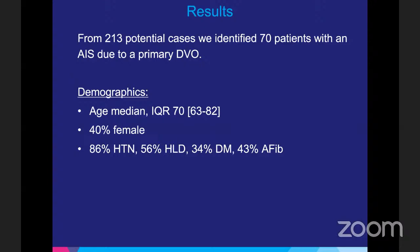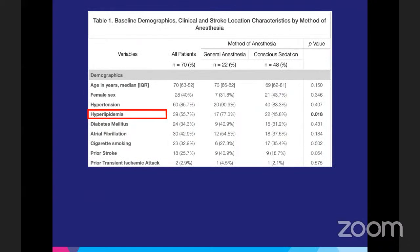From our results, we identified 70 patients meeting inclusion criteria. Median age was 70, 40% were female, with high prevalence of comorbidities including hypertension, hyperlipidemia, diabetes, and AFib. Hyperlipidemia was significantly higher among the general anesthesia group, which was assessed for the multivariable analysis.